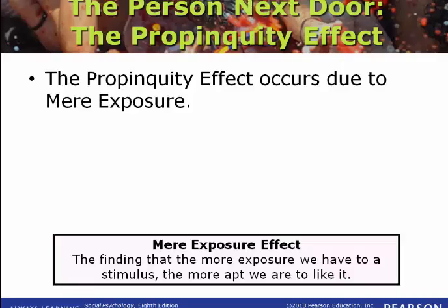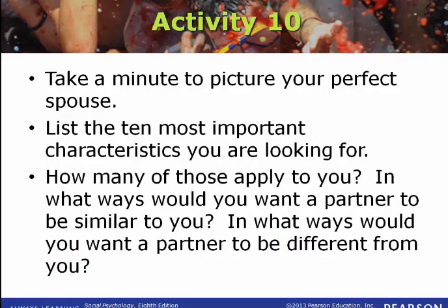Proximity is just the idea that the more you see someone, the more time you spend with them, the more likely you are to be attracted to them. Typically, we end up forming relationships with the people that we see a lot — people who are our neighbors, live in the same apartment complex, take the same classes, or run in the same circle of friends. Today this may not happen as often because we have the internet, but the amount of time we spend with someone is still an important part of whether or not we find that person attractive.